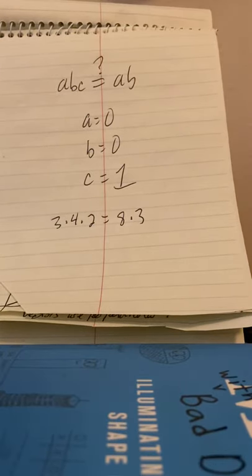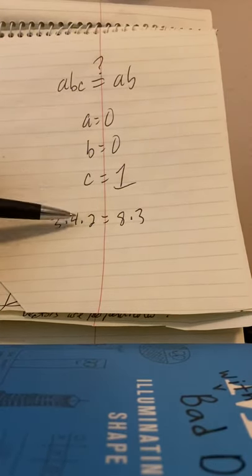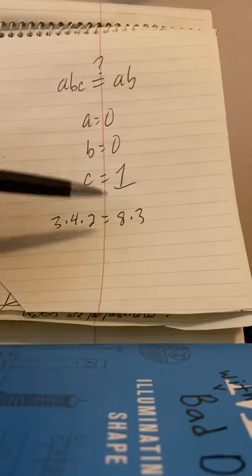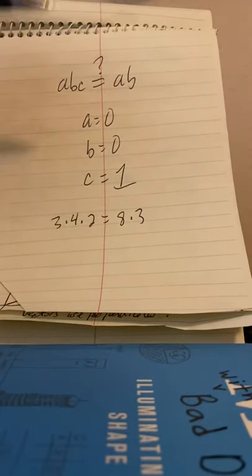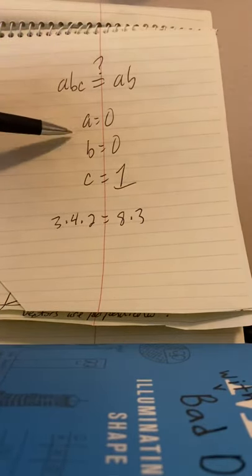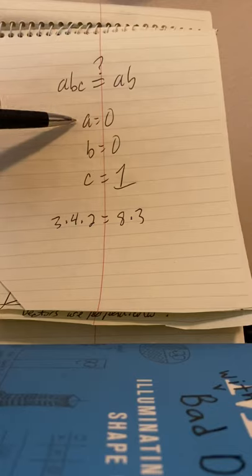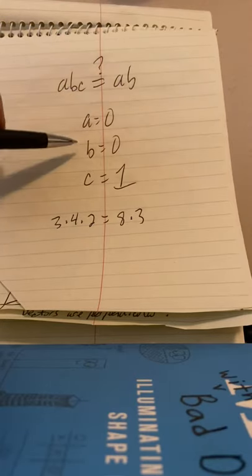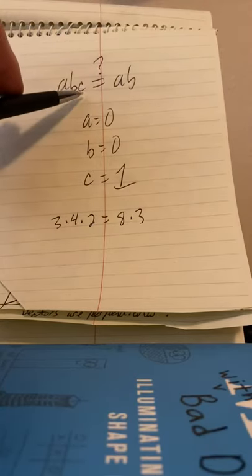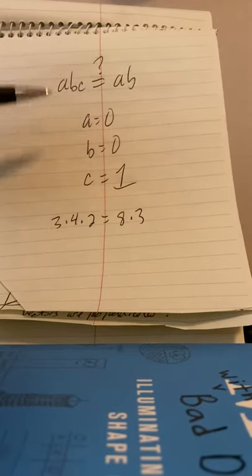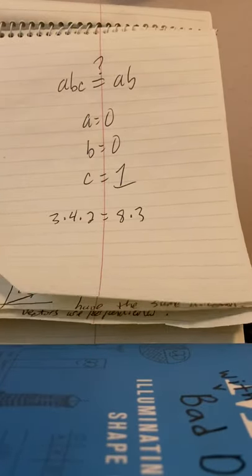Well, of course, there's infinite many solutions because three times four times two, that's 24. Eight times three is 24. We could play that game all day long. But we also have some easier situations. Remember, great mathematicians have the patience to find simple solutions. If a was zero, the product of both sides would be zero. Same for b. But if c was one, then the product of both sides would be a b. So those are the simple solutions.